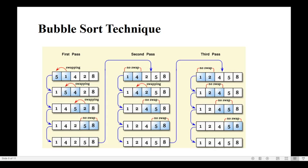It will take the first element and the second element and compare them. Here, take 5 and 1 — out of these two, which one is greater? Five. The first number is greater than the second number. Whenever the first number is greater than the second number, we swap them.